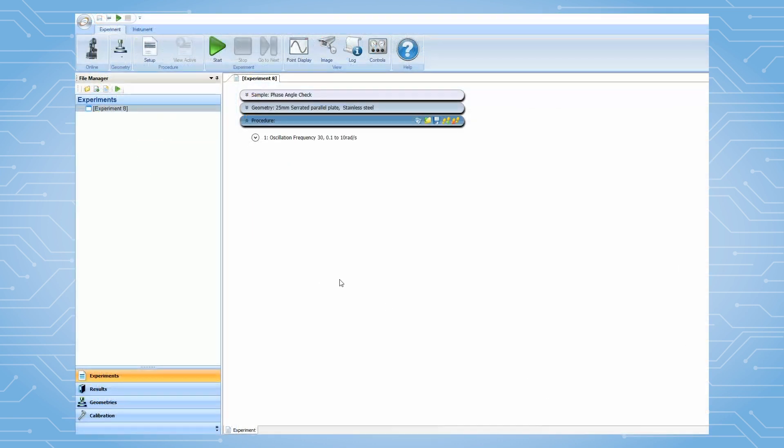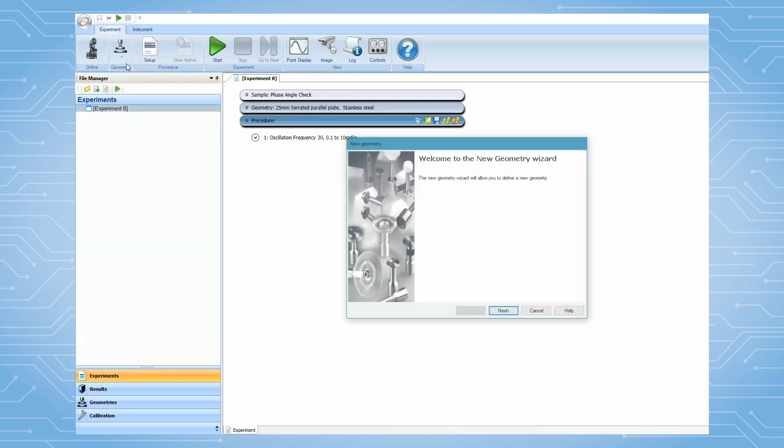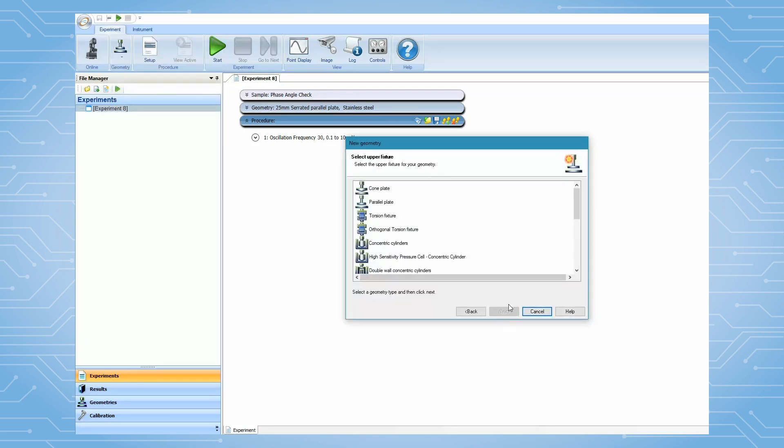If this geometry file has not been previously created, then click on Add New Geometry. Choose three-point bending from the list, then click on Next.